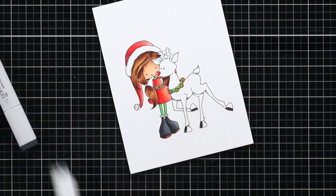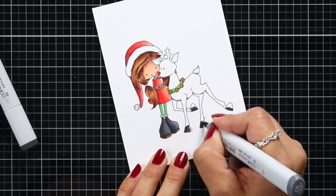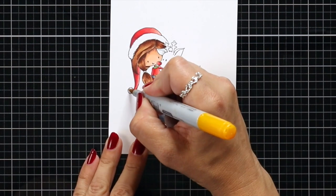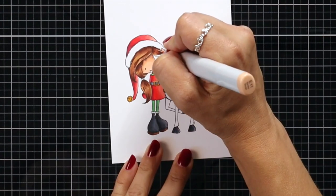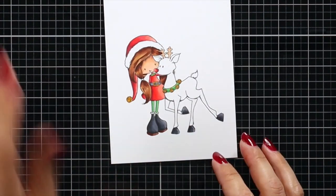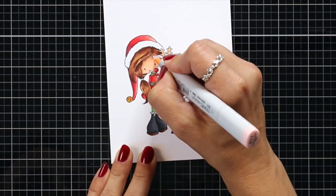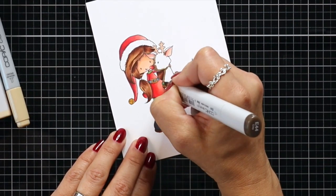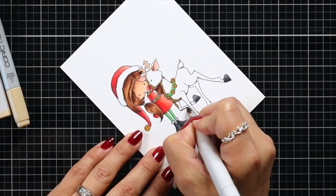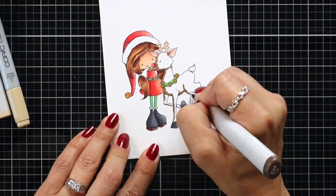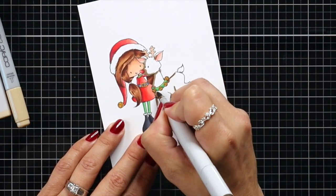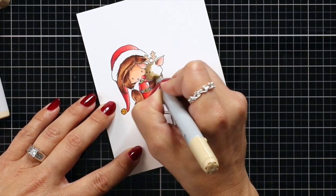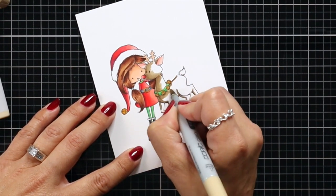For the hooves of my reindeer I used the C8, C6, and C4, just like I did for the boots. I did E11 for the antlers and then I used R11 and R32 for the ears. For my deer, my reindeer, I'm using E44, 43, 42, and 41. I would have gone with more of a traditional brown, but I didn't want it to blend in too much with her hair color, which is why I chose the E40s for the reindeer.